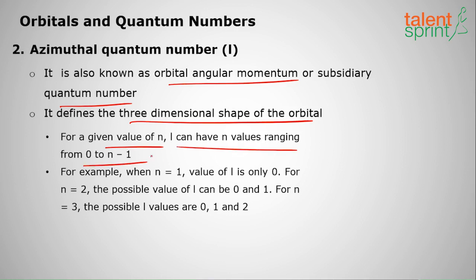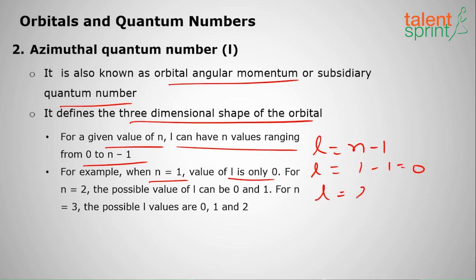For example, if n is equal to 1, the value of l will be zero, since l equals n minus one. If n is 2, then l will be 1. The maximum value of l will be n minus one. So l, the azimuthal quantum number, ranges from zero up to n minus one, and n ranges from one upward.